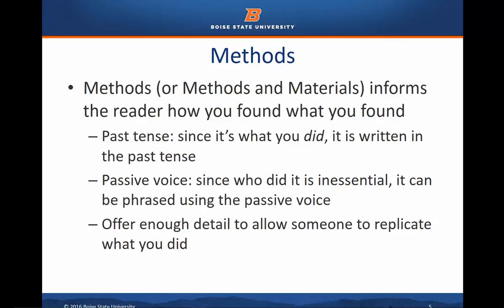The key features of the methods section are: first, it's written in the past tense — it describes what you did. Second, it uses passive voice. You might mix passive and active voice, but you want to focus on what was done rather than who did it. So instead of saying 'we conducted a survey,' you would say 'a survey was conducted using SurveyMonkey.' Finally, your goal is to offer enough detail to allow someone to replicate what you did. In scientific and technical settings, replicability is one of the key features of knowledge creation. If someone can't recreate your findings from your methods section, you haven't communicated clearly what was done.